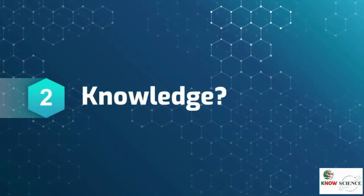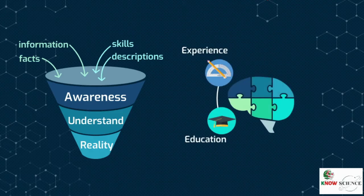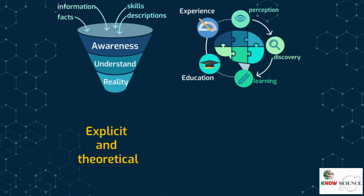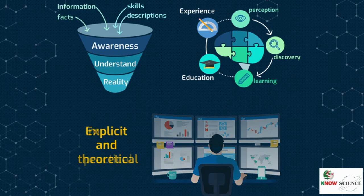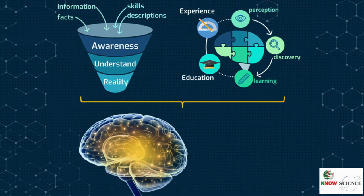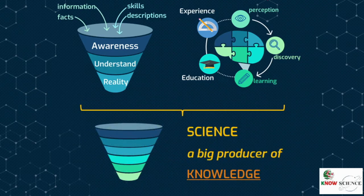Let's see what knowledge is before we continue. Knowledge is a set of awareness or understanding of reality or nature, along with facts, information, descriptions, or skills. It can be acquired through experience or education via perception, discovery, or learning. Knowledge can be either explicit and theoretical, as in acquiring this topic on our YouTube channel, or implicit and more practical, as in using a tool. Knowledge acquisition involves complex cognitive processes: perception, communication, and reasoning.